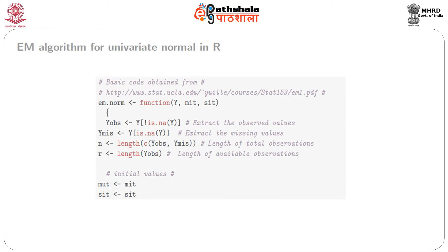This code has originally been taken from the given website, but has been modified to suit our needs. We start by creating a function called EM.norm. This function takes three things. The first is the vector of inputs of the data, denoted by y, which contains both the observed as well as the missing data.